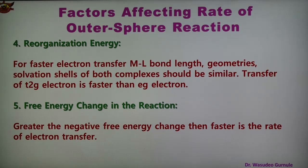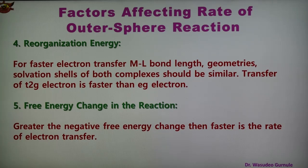The fifth factor is the free energy change in the reaction. A greater negative free energy change results in a faster rate of electron transfer. So these are the five factors which are affecting the rate of outer sphere reactions.